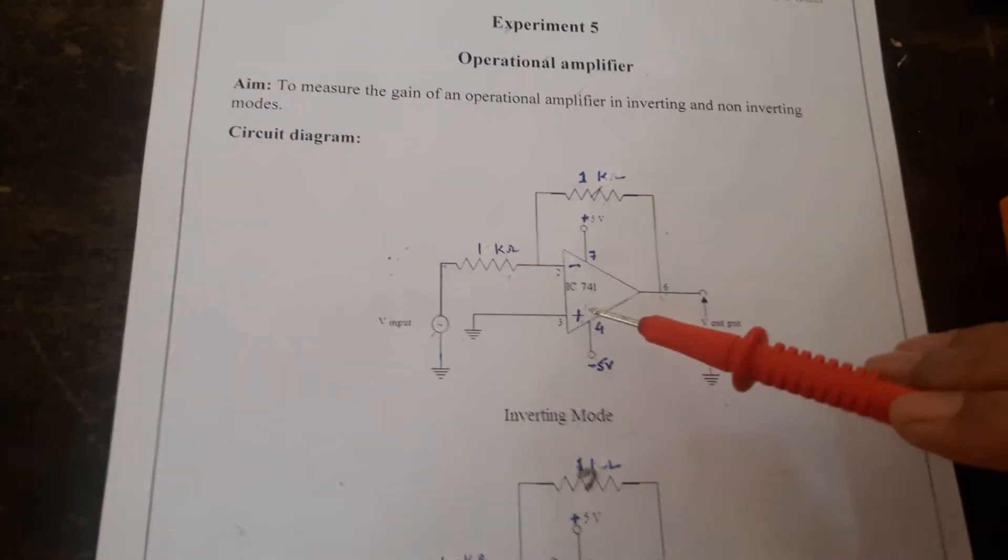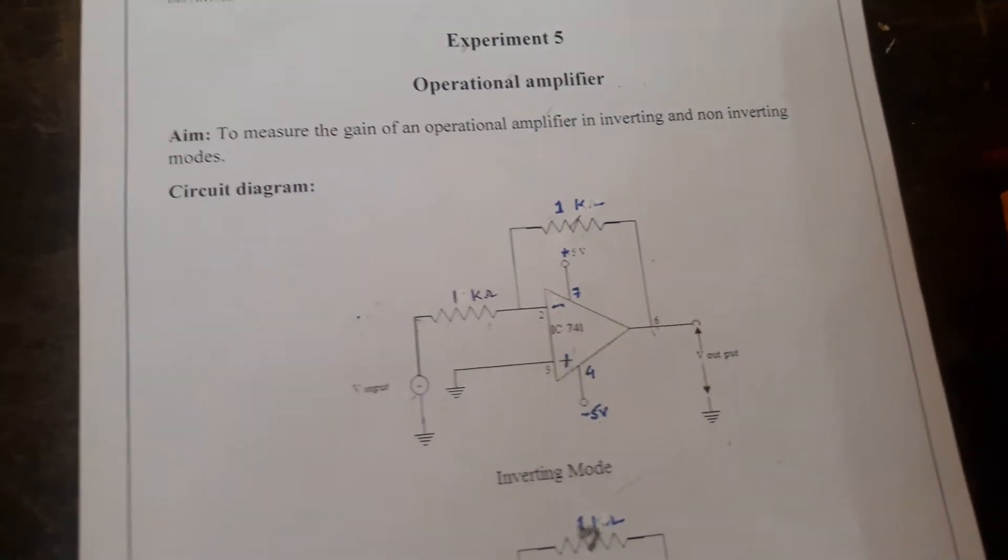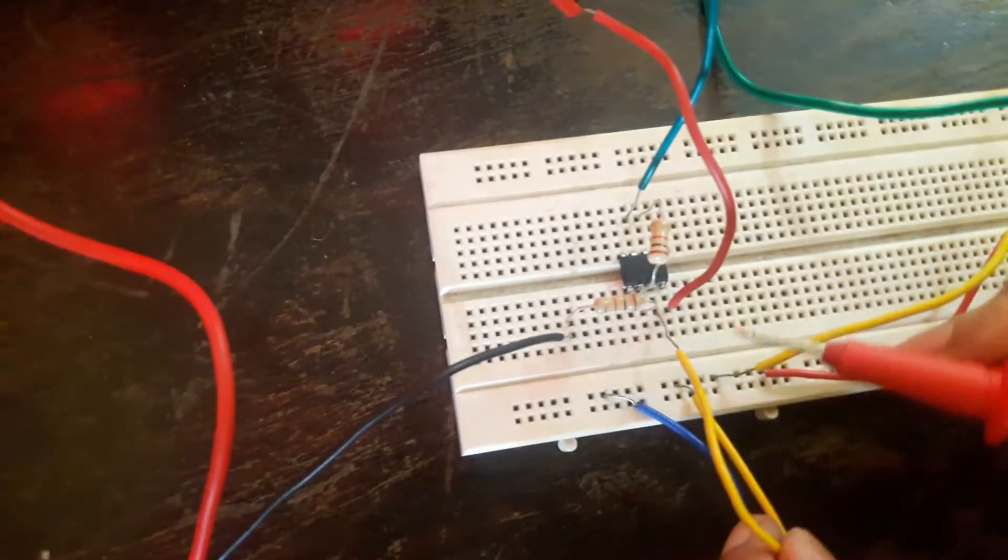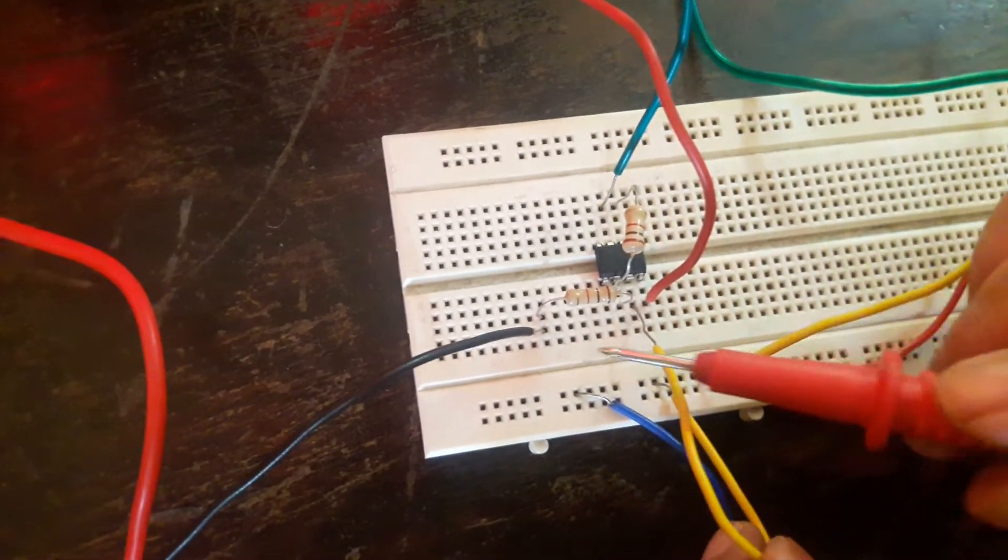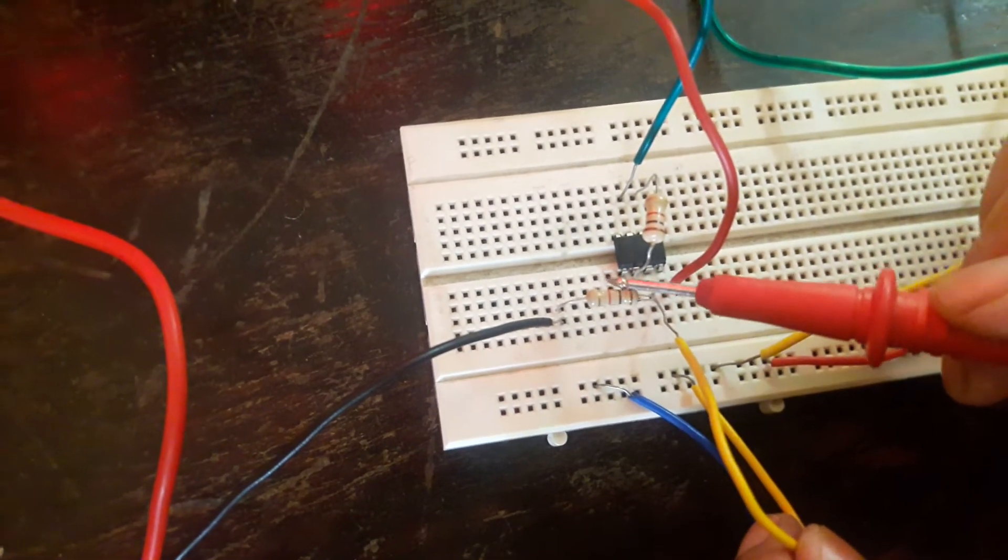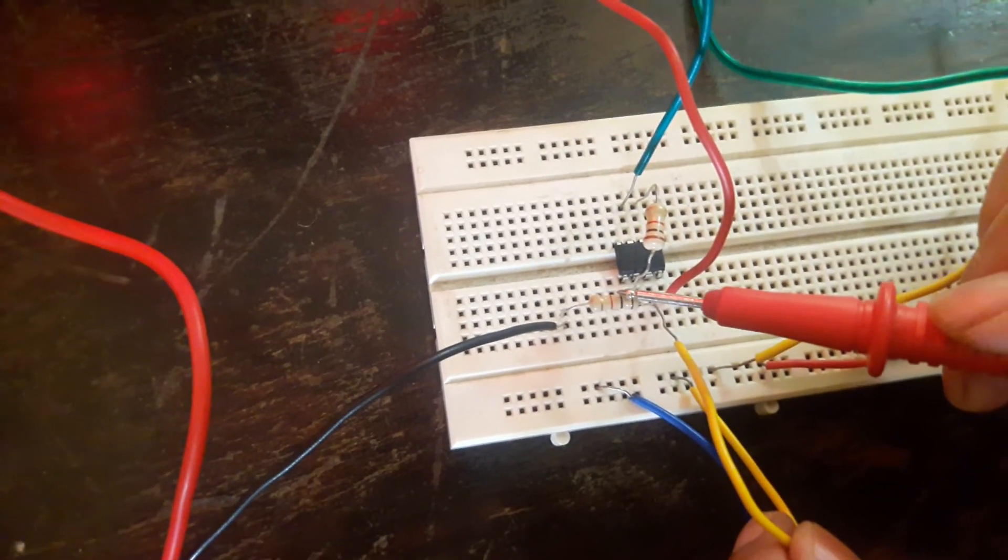I will start my connections from pin 3. Pin 3 should be grounded. So pin 3 is grounded here. From pin 2, it is given to the input voltage across the resistor 1 kilo ohm. This we call it as input resistance.